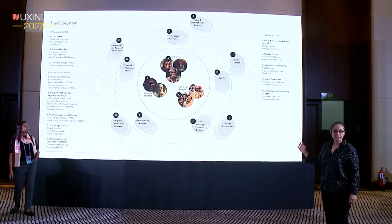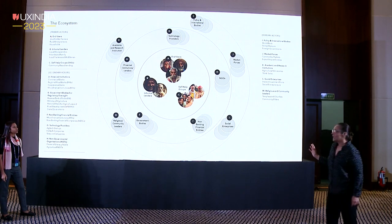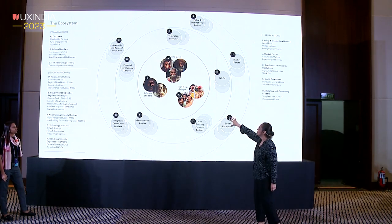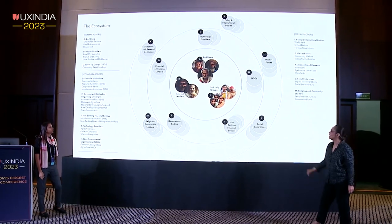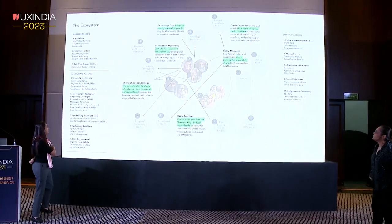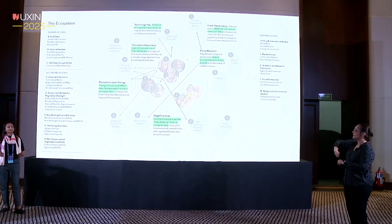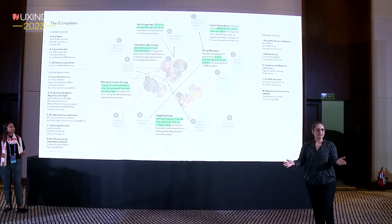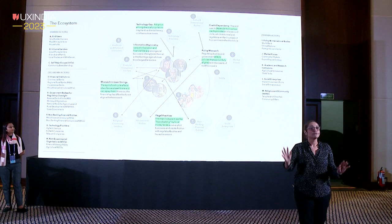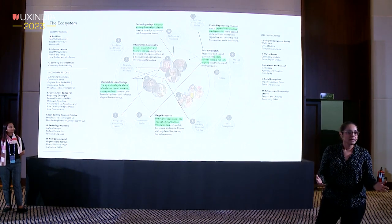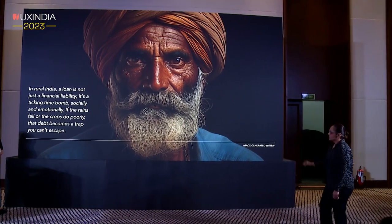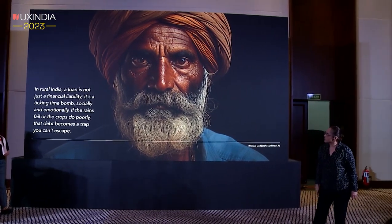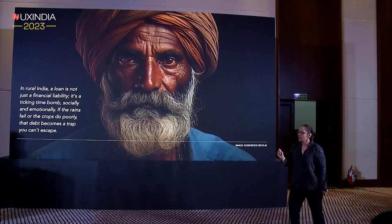The ecosystem is fairly complex. In the middle we have our lenders and end users, but imagine the rounds of complexity around it — information asymmetry, illegal practices, loan sharks giving unfair terms to our farmers and folks in the villages. There's a quote: a loan is not a financial liability, it's a ticking time bomb. These are wicked problems, and I want to establish the problem space here so we understand how hard this is.